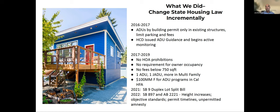In 2019, I think we took a major step forward where the law passed that allowed one accessory dwelling unit and one junior accessory dwelling unit on all single-family home lots in the state of California. That effectively ended single-family zoning as we know it in California, although it was underscored in 2021 with SB9, which is a duplex lot-split bill — basically allowing four units on every single-family home lot.